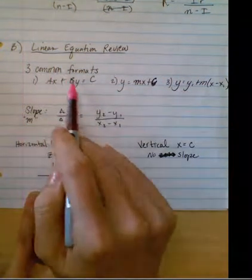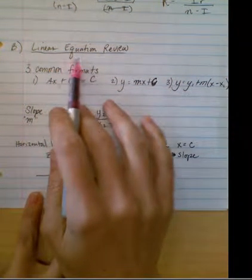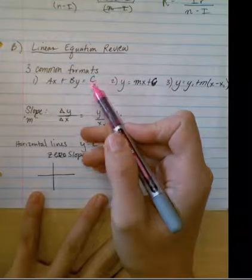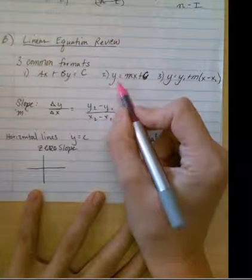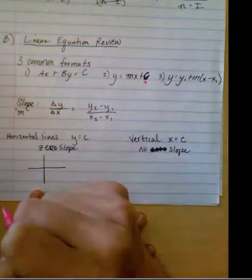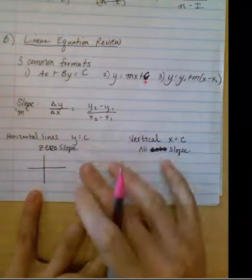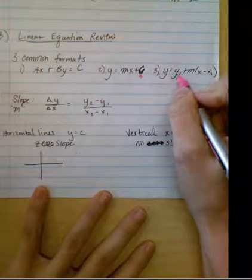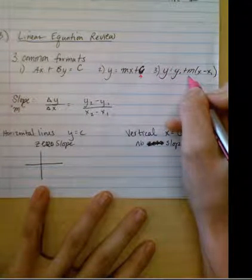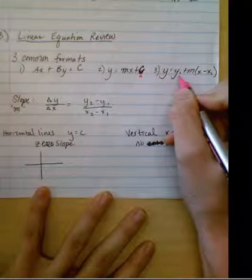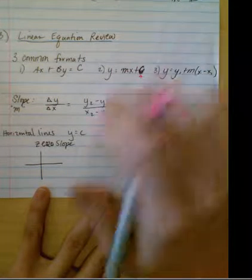The three most common formats of equations when we're talking about linear equations are Ax plus By equals C, y equals mx plus b (but IB likes to do their own thing, so they call that a C), and then the third way is point-slope: y equals y sub 1 plus m times the quantity x minus x sub 1. IB might call this a C also.